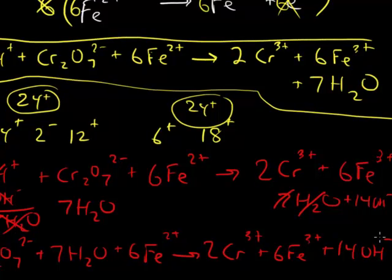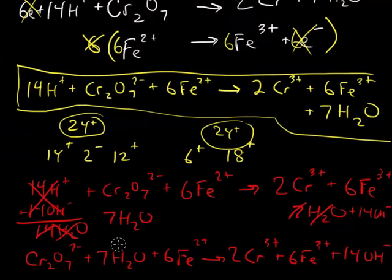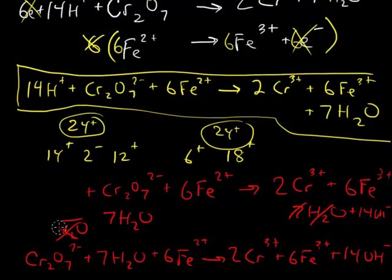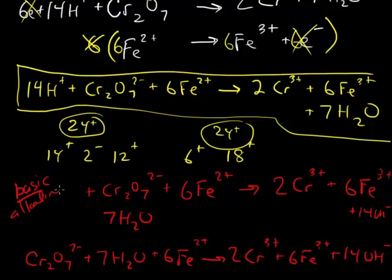And this here is now the balanced chemical equation for the solution. Again, these all cancel out. So this might be an easier way of drawing it. There we go. And this cancels out there. And that is your final answer for the redox equation in basic or alkaline solution.